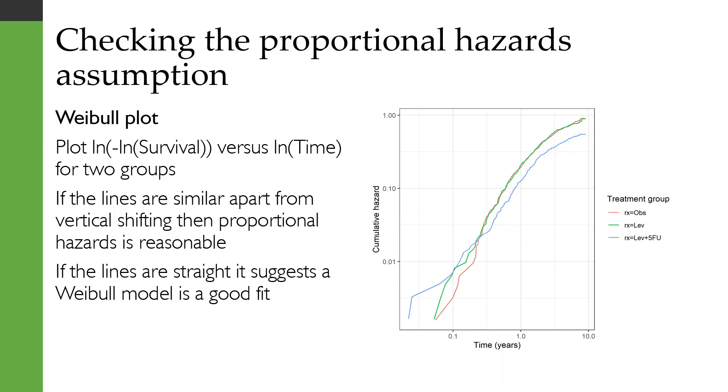Now in this example on the right, you can see that these lines aren't exactly straight. They're definitely kind of tailing off as we get towards longer time periods, so probably suggesting that in this case a Weibull model might not be very good. But at least from this point on, which is I guess about four months, proportional hazards looks like a very good assumption. This curve is almost exactly these curves shifted down a tiny bit.